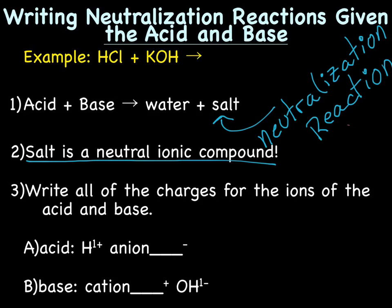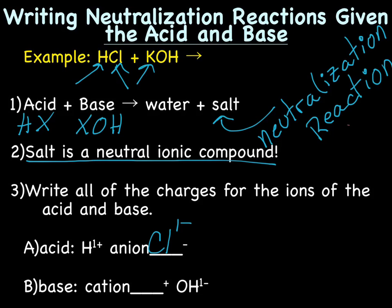The general formula for an acid is HX, with H being the cation and X being an anion. The general formula for a base is X being the cation and an OH. So for HCl, the acid has H 1+ and our Cl is our anion at Cl 1−. The base, potassium hydroxide, has K 1+ as the cation and OH 1− as the hydroxide.